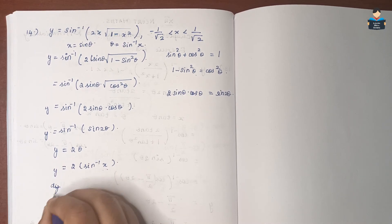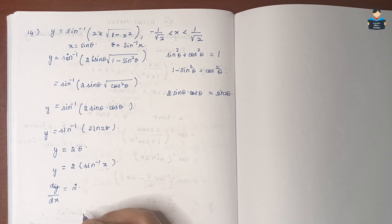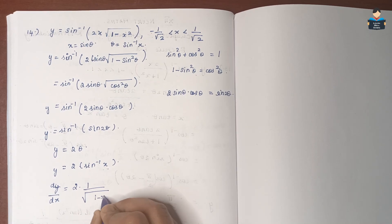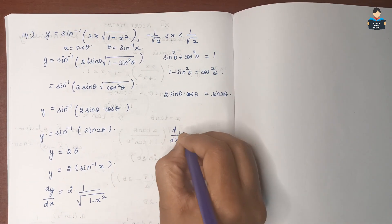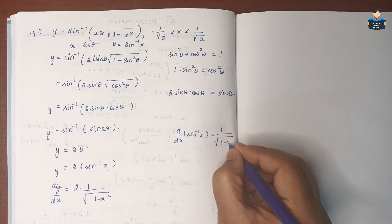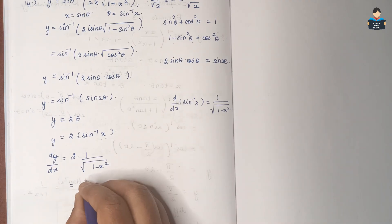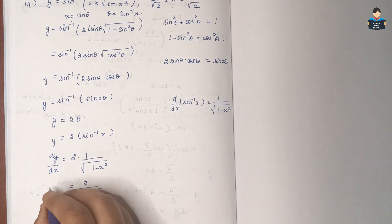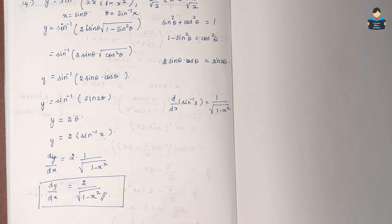Now differentiating with respect to x: dy/dx equals 2 times the derivative of sin inverse of x, which is 1 by square root of 1 minus x square. So dy/dx equals 2 by square root of 1 minus x square.